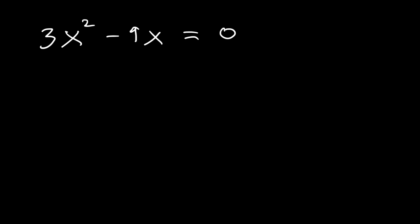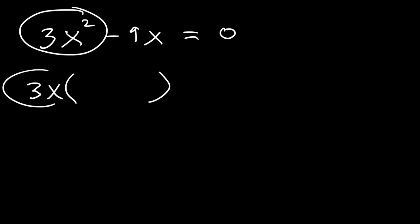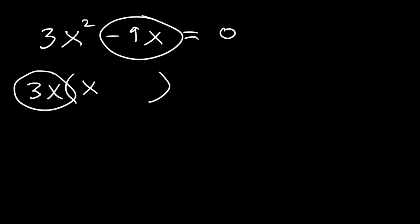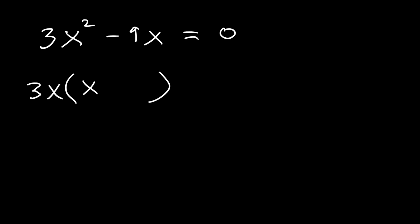In this problem we only have two terms. The best thing we could do is factor the GCF — the greatest common factor. The greatest common factor is 3x. To find out what goes inside, divide. 3x squared divided by 3x is equal to x. And if you divide negative 9x by 3x, that's equal to negative 3.